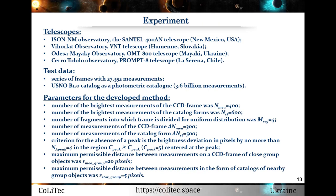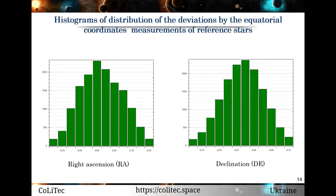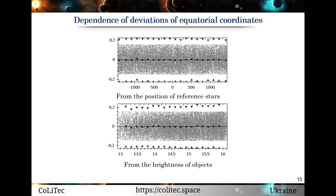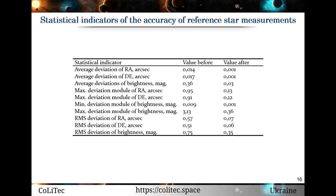On this slide, you can see the details about our experiment. Series of frames were received from different telescopes in New Mexico, Slovakia, Chile, and Ukraine. More than 27,000 measurements were used for research. The parameters for the developed method are on the slide; all of them were received empirically. As a result, you can see histograms of distribution of deviations in equatorial coordinate measurements of reference stars — right ascension on the left side and declination on the right side. Also presented is the dependence of deviations of equatorial coordinates from the position and brightness of reference stars. We calculated different statistical indicators of accuracy: average, root mean square, minimum and maximum deviations for equatorial coordinates and for brightness.